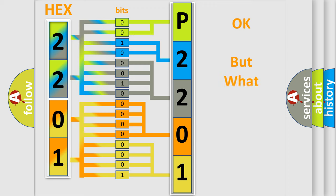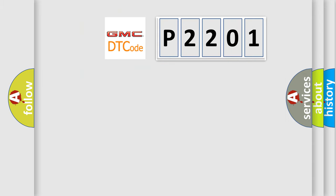We now know how the diagnostic tool translates the received information into a more comprehensible format. The number itself does not make sense if we cannot assign meaning to what it actually expresses. So, what does the diagnostic trouble code P2201 interpret specifically for GMC car manufacturers?